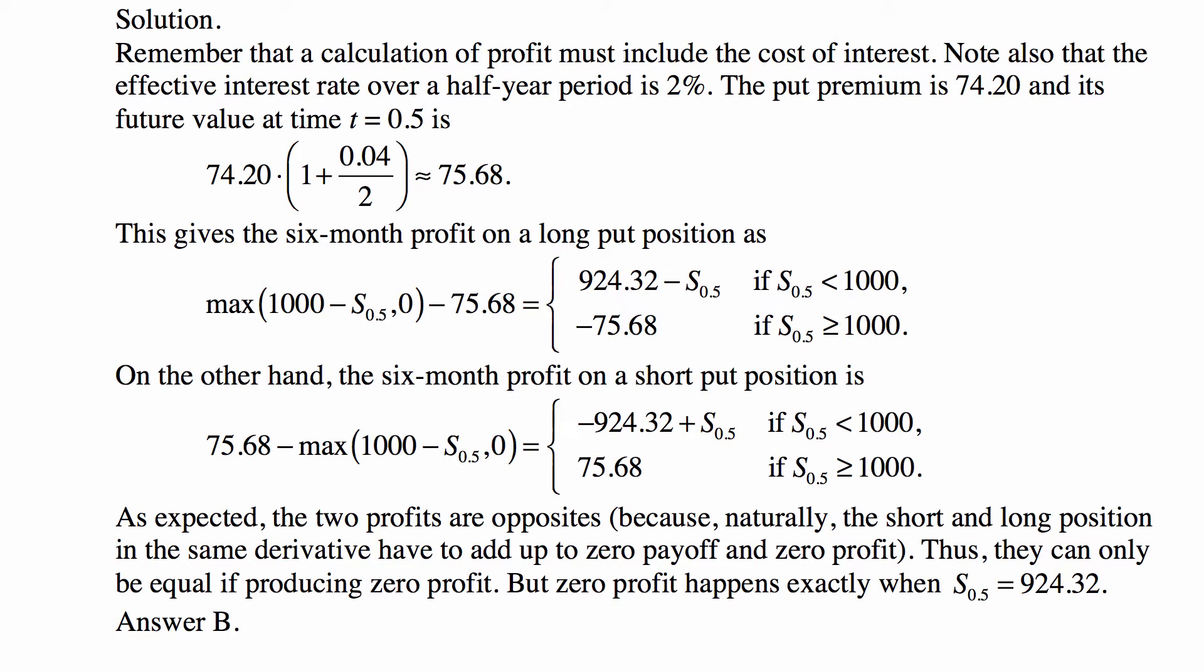This gives the six-month profit on a long put position as the maximum of - when you own a put, it means that you will exercise the put if the price is below 1,000 and you will sell the stock for 1,000.